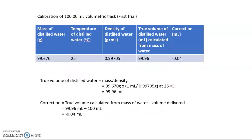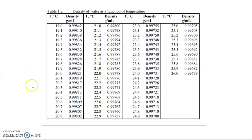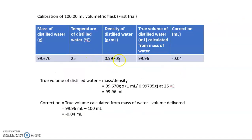For this example, the temperature is 25°C, so the density of the distilled water will be 0.99705 grams per ml.